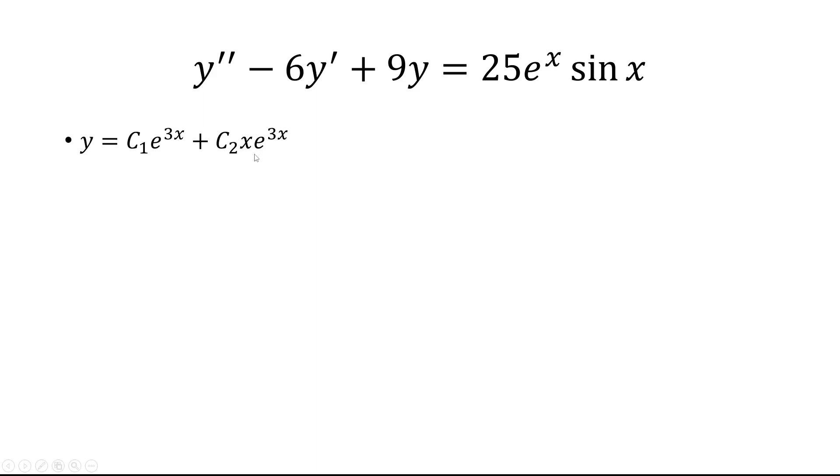Now we want to consider when the differential equation is equal to 25 e to the x sine x. So we're going to come up with a y sub p, which is the form a e to the x cosine x plus b e to the x sine x, where a and b are constants.